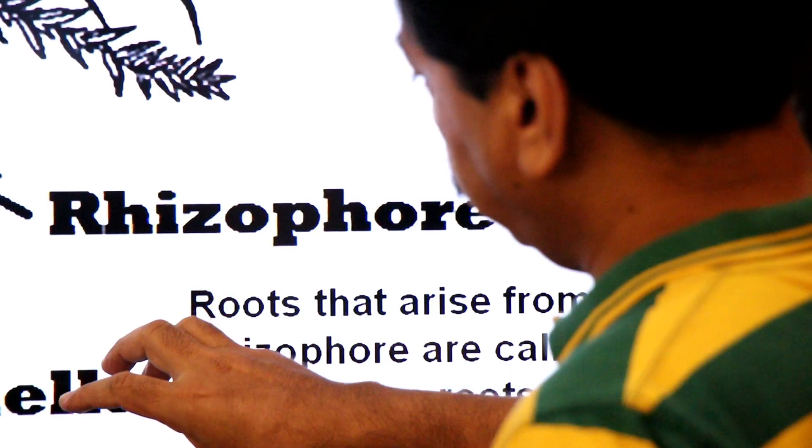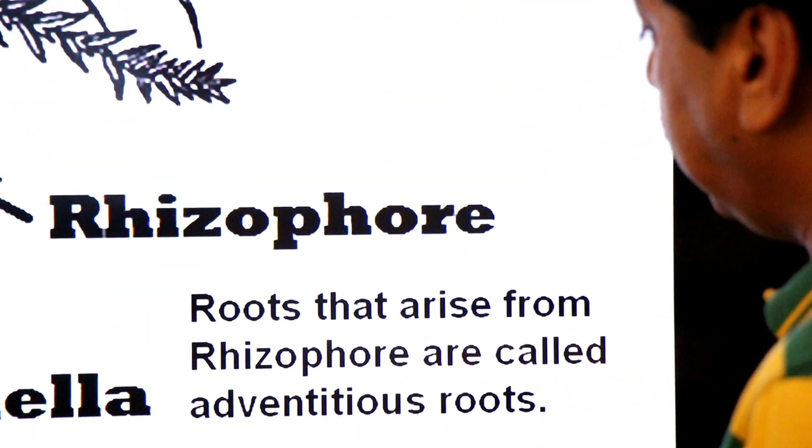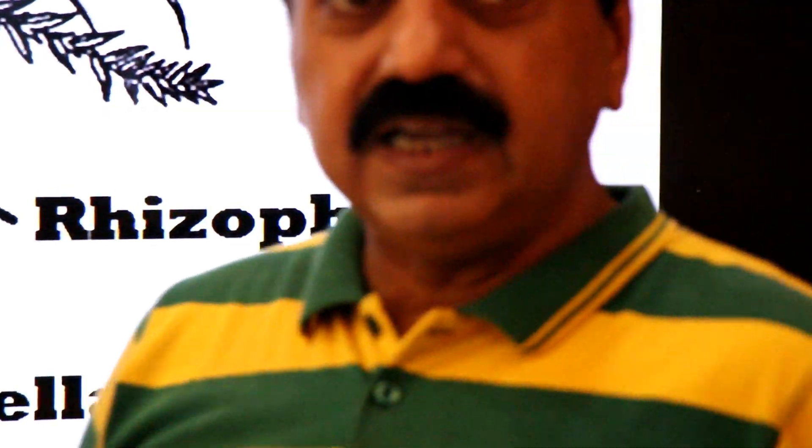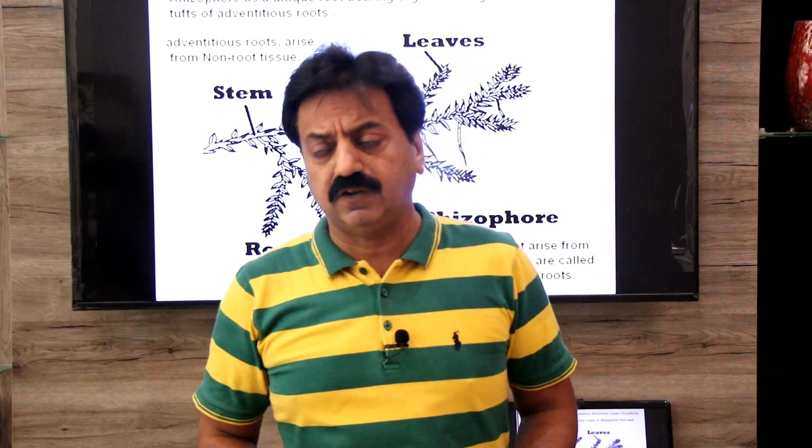The roots that arise from the rhizophore in Selaginella are called adventitious roots. Another plant of this group is Lycopodium, which is homosporous — producing the same type of spore. Some genera are heterosporous, producing two types of spores: microspores and megaspores; others are homosporous, producing the same type of spore.